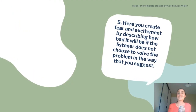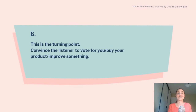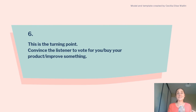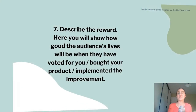Number five: here you create fear and excitement by describing how bad it will be if the listener does not choose to solve the problem in the way you suggest. So here you build up the tension, the excitement, and the fear. Number six: this is the turning point — the most exciting part of a story and also the most interesting and exciting part of a persuasive speech. It is here you make your audience decide to vote for you, buy your product, or change something in their life and realize they really want to improve something.